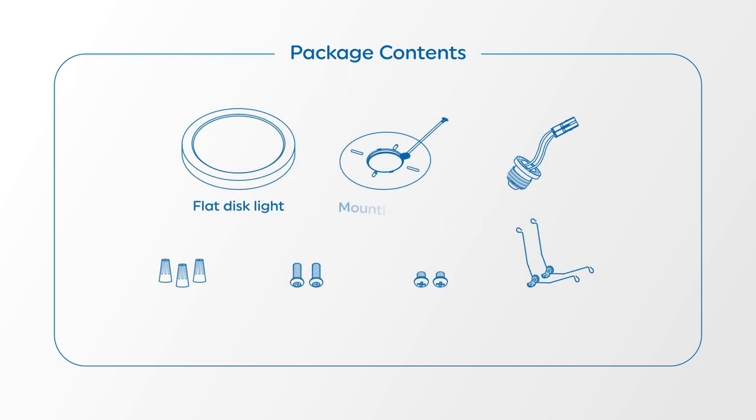In the packaging for each disc light, you'll find an installation guide, one flat disc light, one mounting plate, one E26 adapter, three wire nuts, two long screws, two short screws, and two torsion springs.